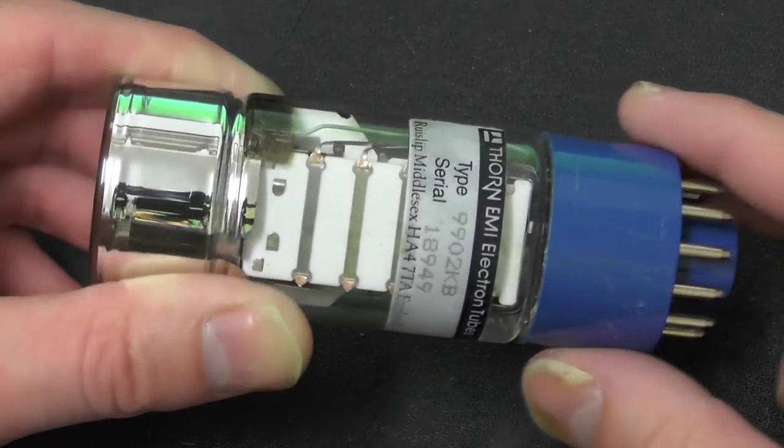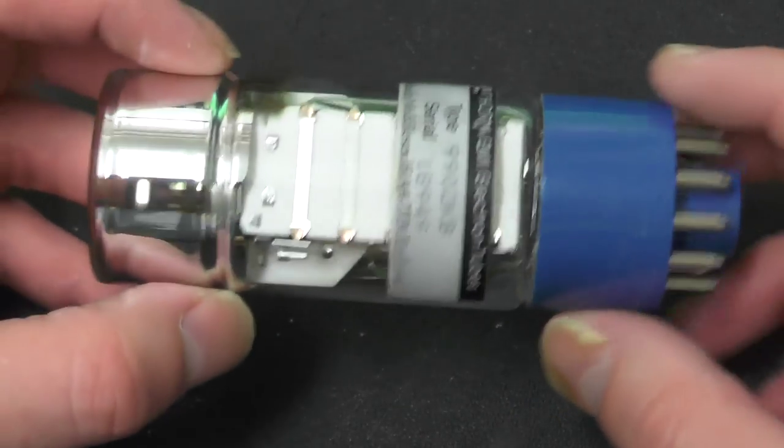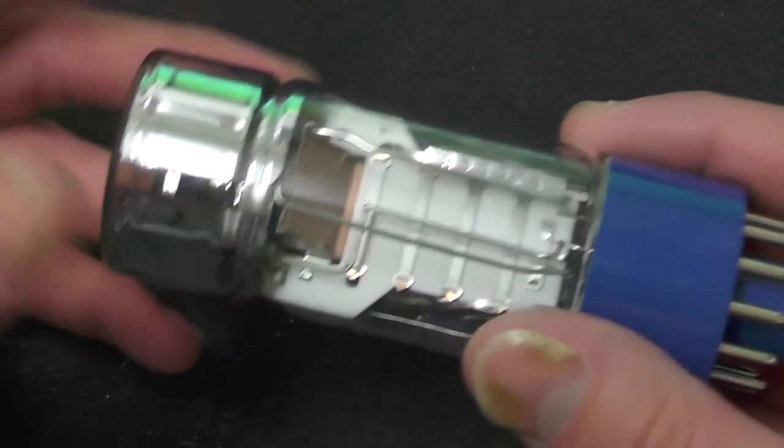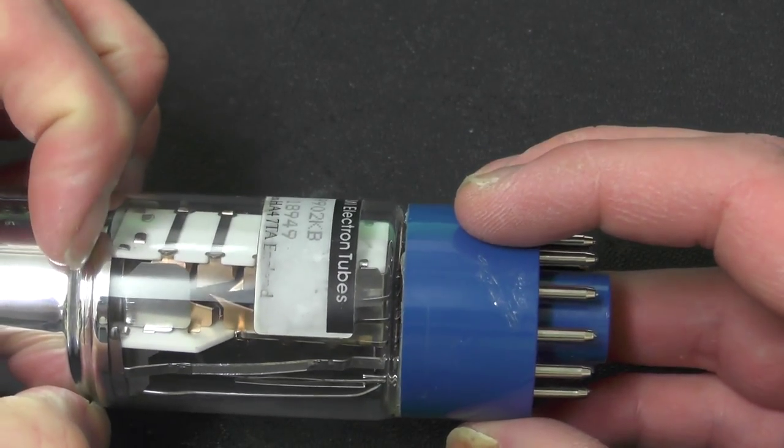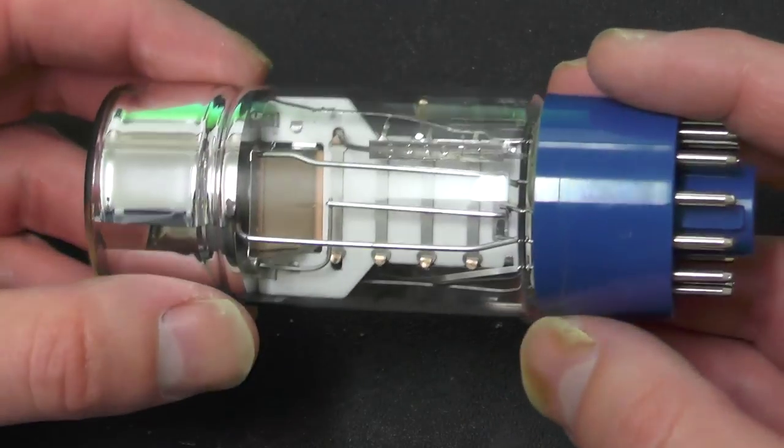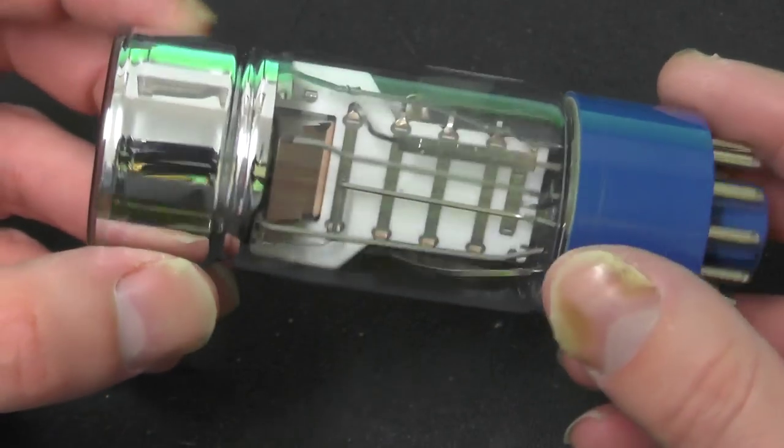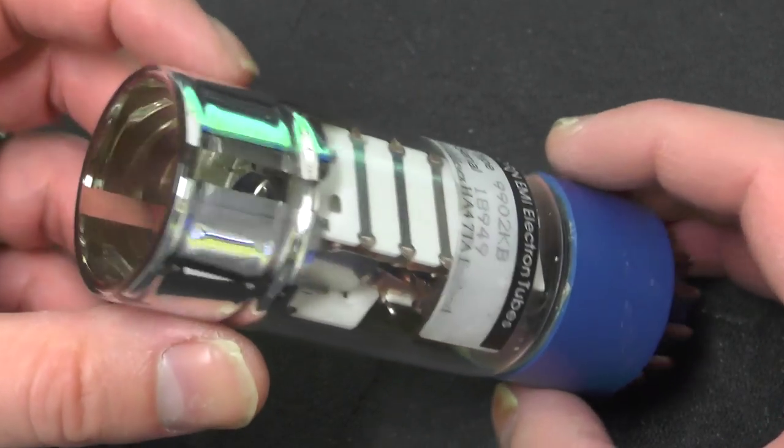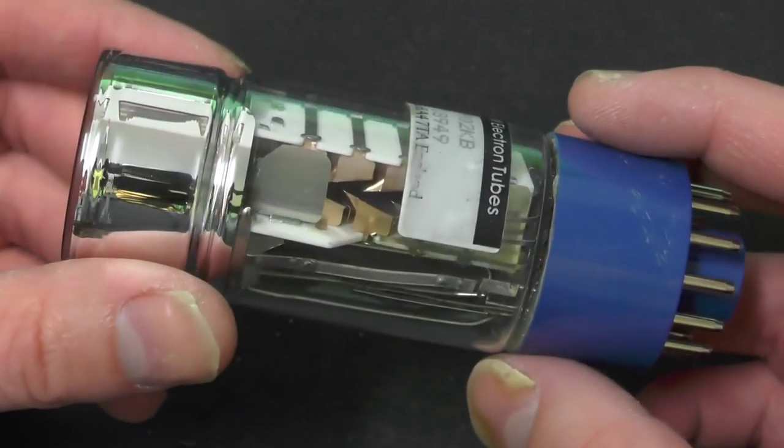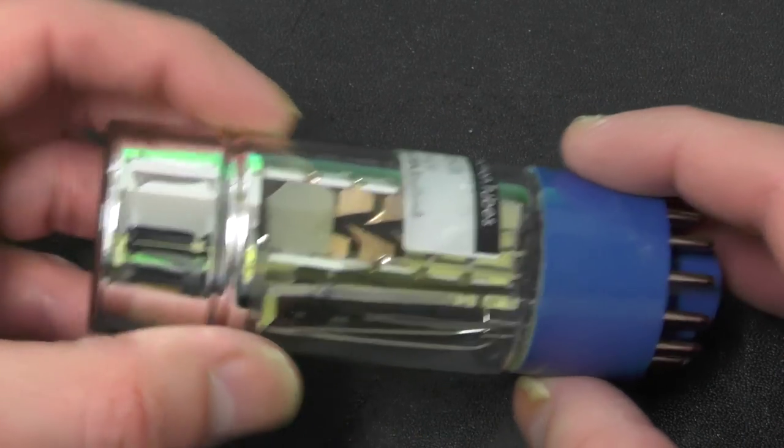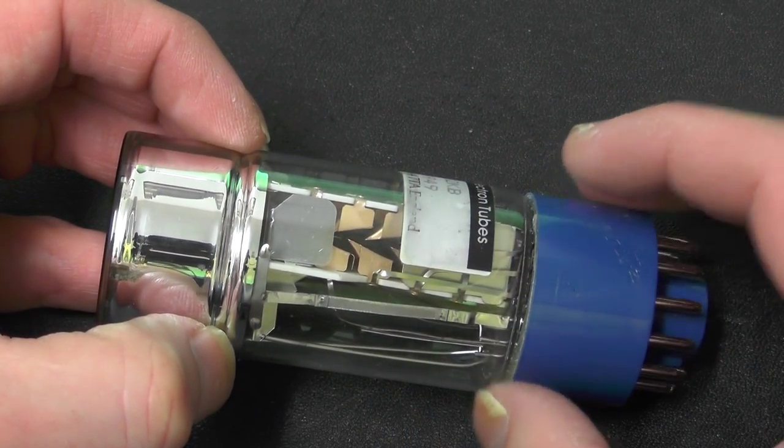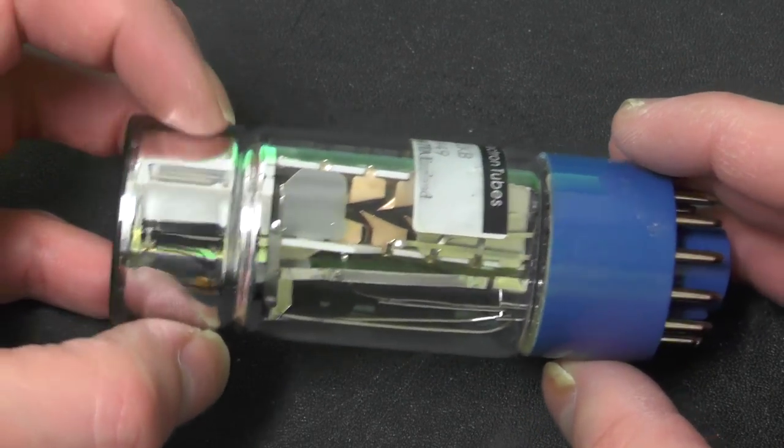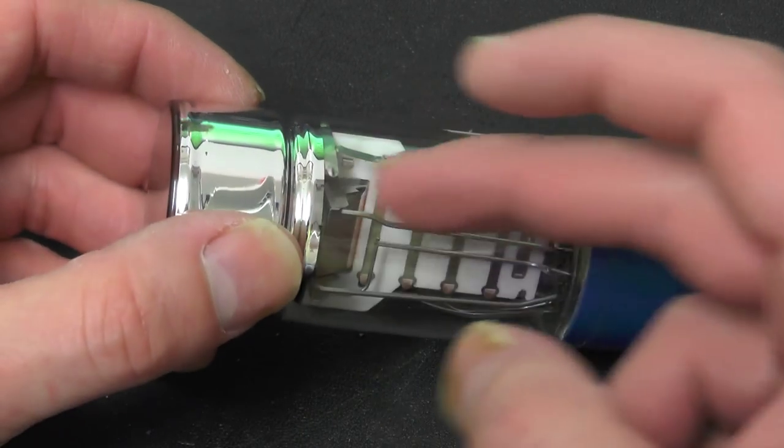So why do these stop working? A number of things can damage a photomultiplier. First off it's a vacuum tube so if there's any loss of the vacuum through mechanical failure or some kind of gas leak then that will destroy the vacuum inside the tube rendering it useless. The second cause of failure is a bit more complicated. If the photomultiplier is operated in anything other than almost darkness, the amount of electrons that are actually produced by the dynode is absolutely immense. And what this actually does is cause the dynode to actually heat up. Now as they heat up they will start to release gases which will then be inside the tube.